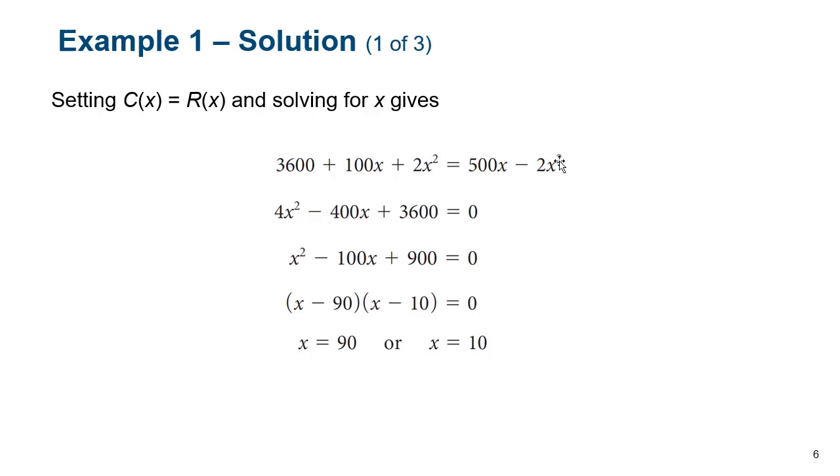Which gives us 500X minus 2X squared. And then, of course, we know that profits is revenue minus cost, so all we have to do is, oh I'm sorry, we're trying to find the break-even point, so we're going to set them equal to each other. And because we notice that we have these squared terms, we're dealing with quadratics, or we're dealing with parabolas, and the only way to solve a quadratic is to put everything on one side and set it equal to zero. So we shuffle everything over to this side, set it equal to zero.